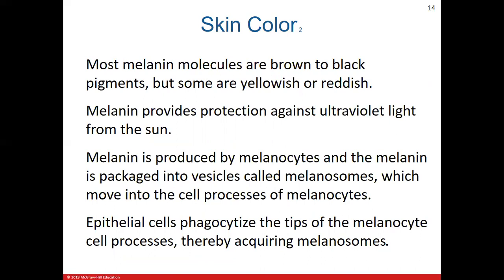Melanin is mainly a brownish to black pigment and is one of the primary determinants of skin color. It also provides some UV light protection, which is important for protecting the body from UV radiation. The specialized cells that produce melanin are called melanocytes, which are found in the epidermis. The melanin is packaged into little storage vesicles called melanosomes, similar to the storage vesicles discussed in chapter 3.